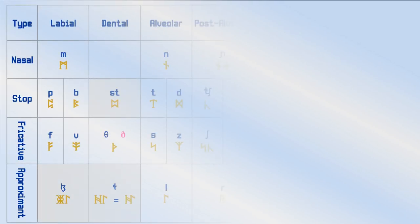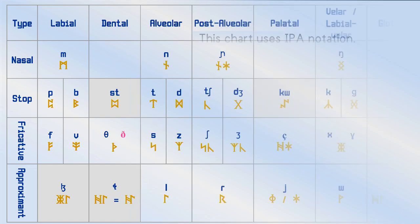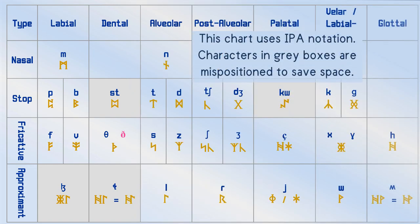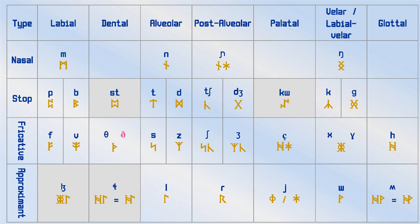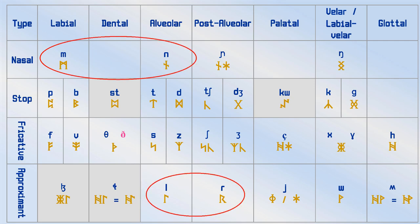Today on Rune Revival we want to know what you think. Should a syllabic consonant be written with a single rune? Here you see the chart of Anglo-Saxon runes and their respective consonant sounds in IPA for modern English. These are the four which can be syllabic consonants — that is, a consonant which forms a syllable in itself. For example, the M at the end of rhythm.